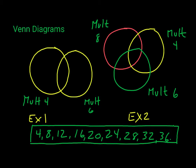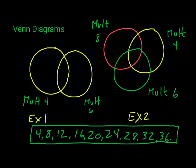Now let's look at Venn diagrams. There are two basic types: two-circle Venn diagrams and three-circle Venn diagrams. For example, everything in this circle is a multiple of four, and everything in this circle is a multiple of six. Numbers in the middle are numbers that appear in both the four times table and the six times table.